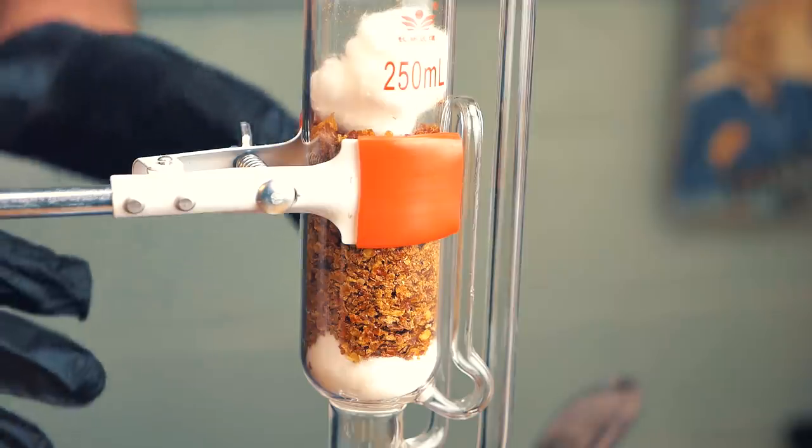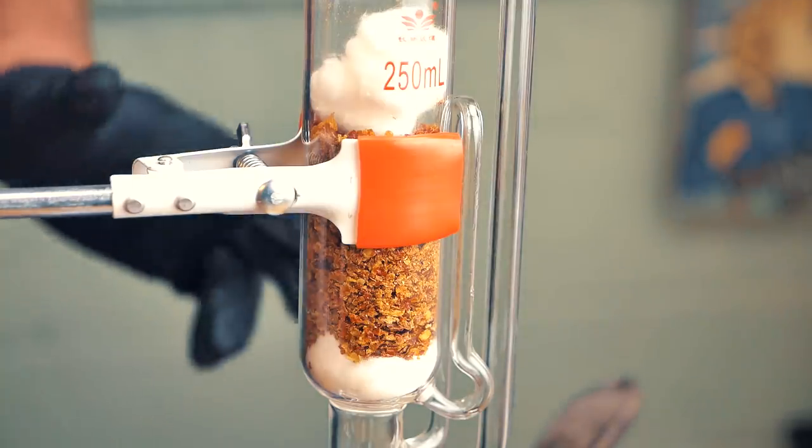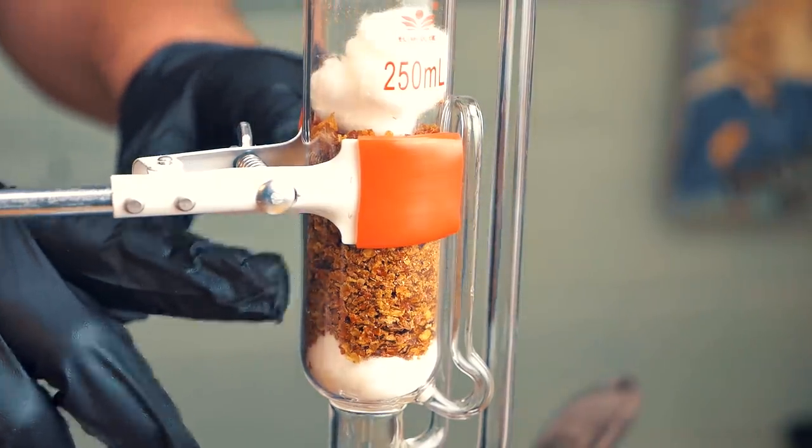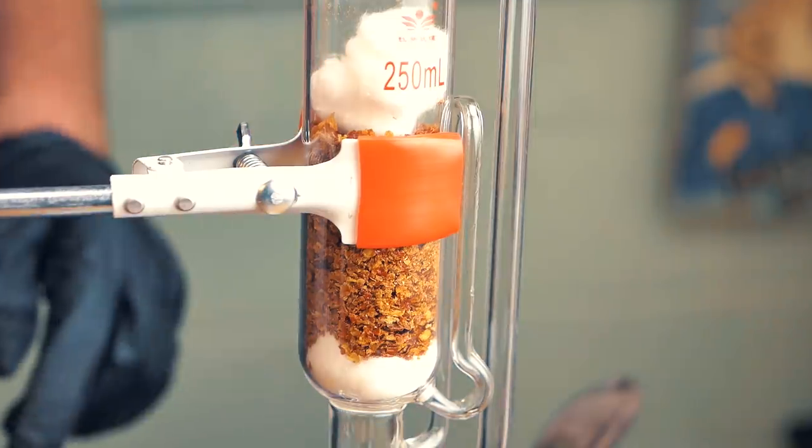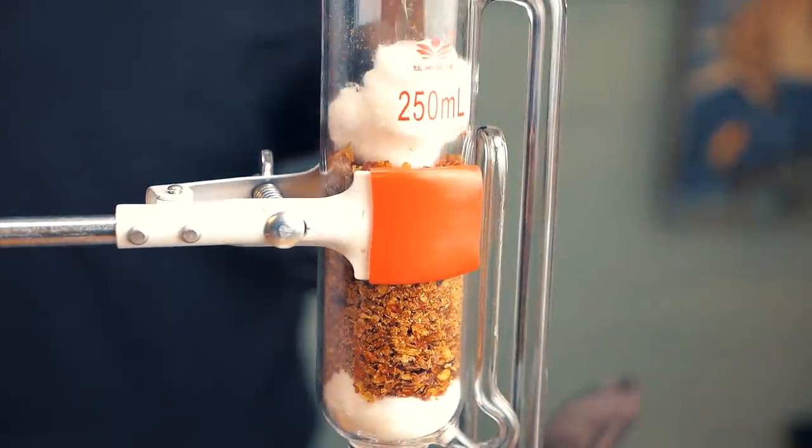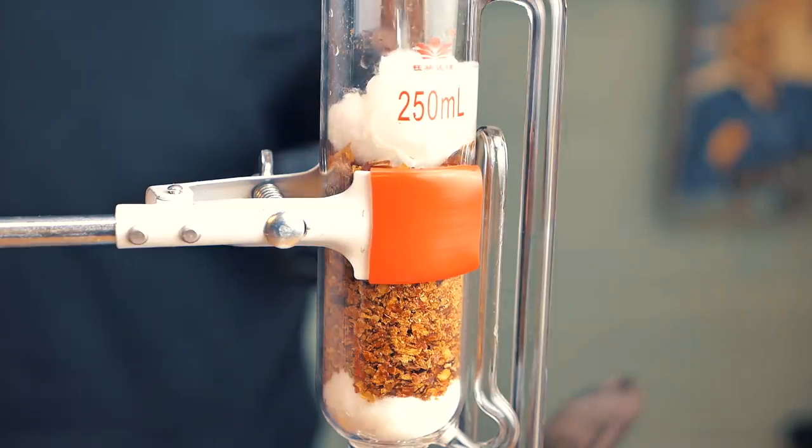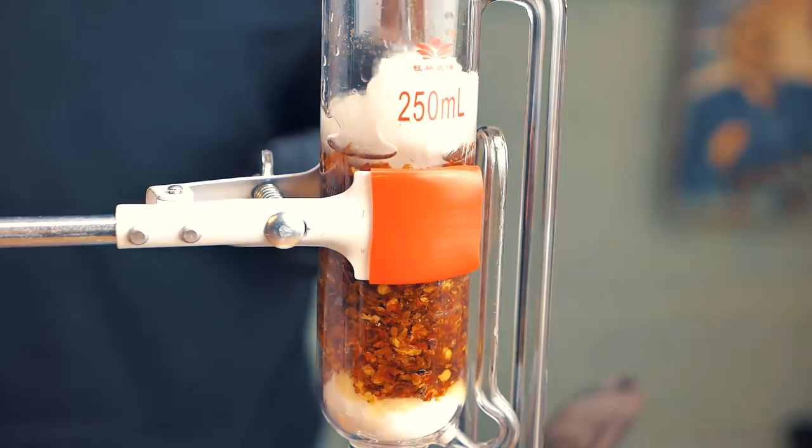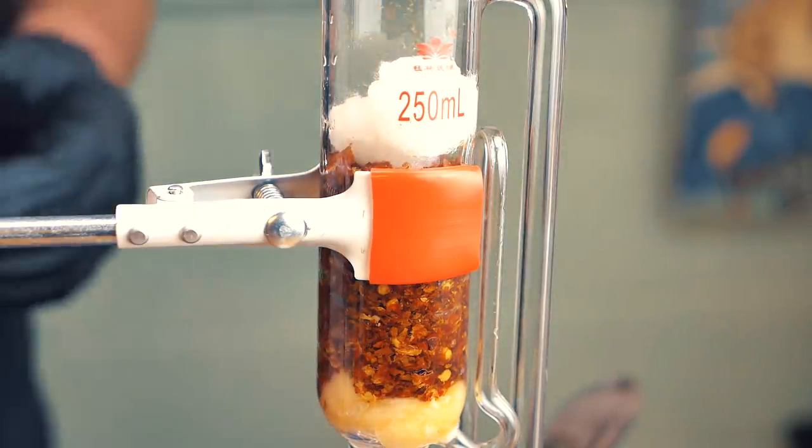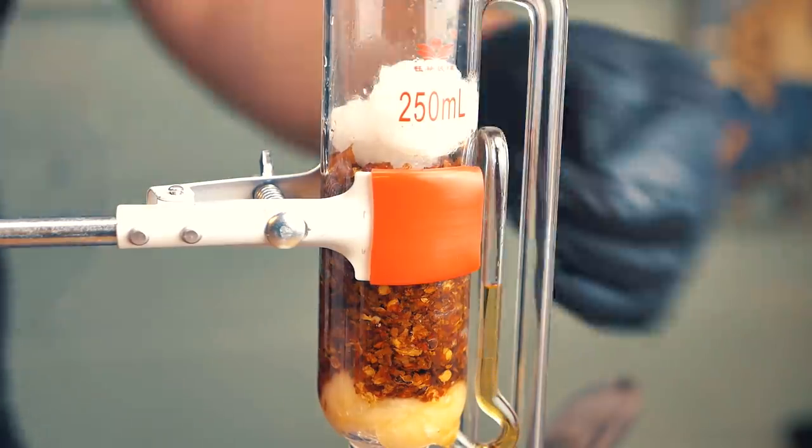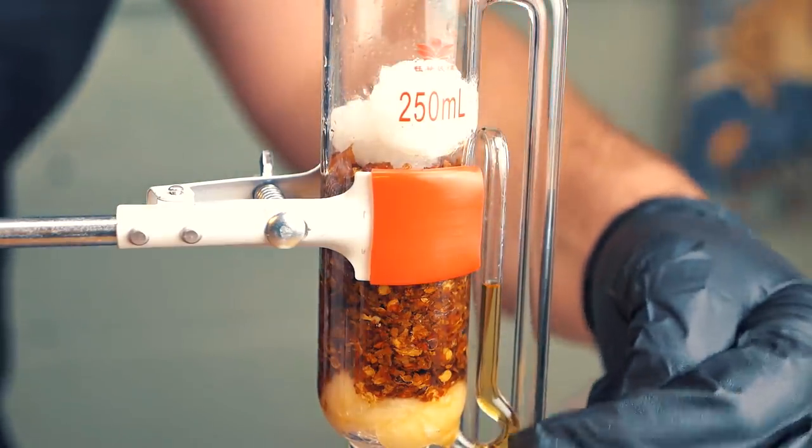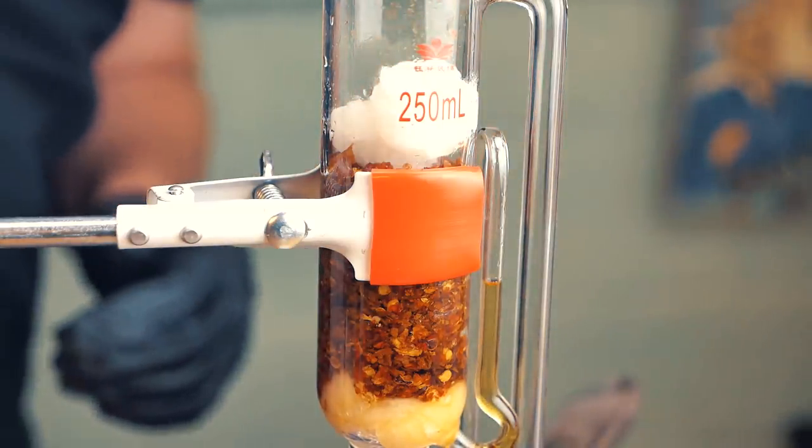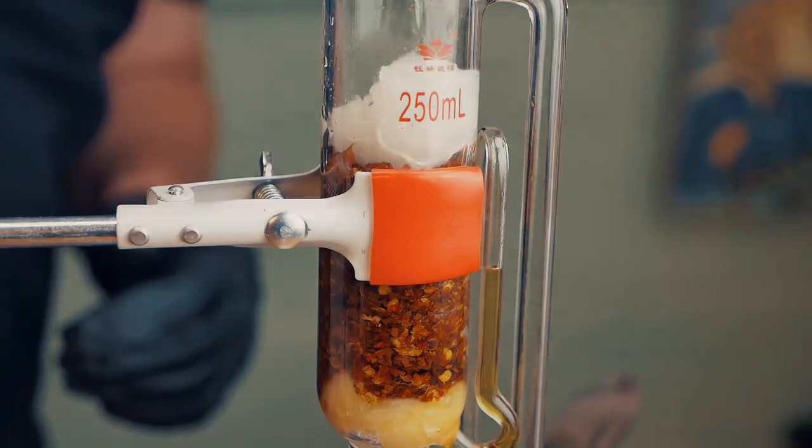For this extraction, we're going to use about 200 milliliters of ethanol, so I'm going to measure that out quickly, and we're going to pour some of it into the top here, into the Soxhlet extractor itself, and the rest we're going to pour down into the round bottom flask. We can see here that the ethanol is already starting to pull some of the capsaicin out of the peppers, so it's already starting its job, and I'm just going to fill this up just below the level of where the siphon would actually begin.